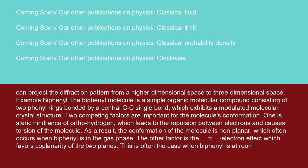Example: biphenyl. The biphenyl molecule is a simple organic molecular compound consisting of two phenyl rings bonded by a central C-C single bond, which exhibits a modulated molecular crystal structure. Two competing factors are important for the molecule's conformation.